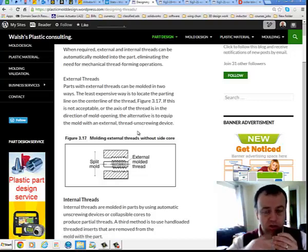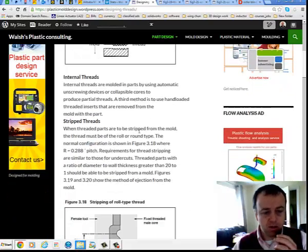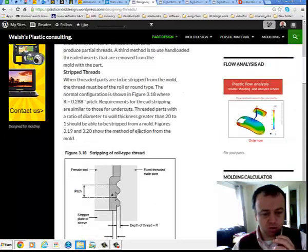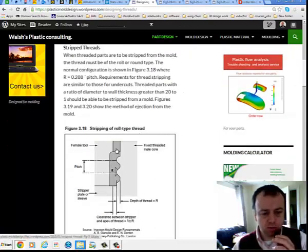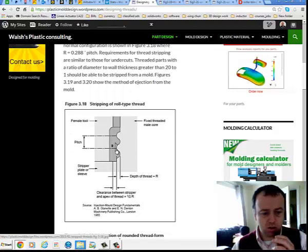So we may need to use an automatic unscrew device, or there are other options you could potentially use, cheaper options. Rounded threads are an option.